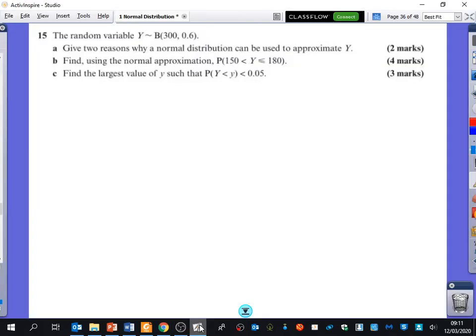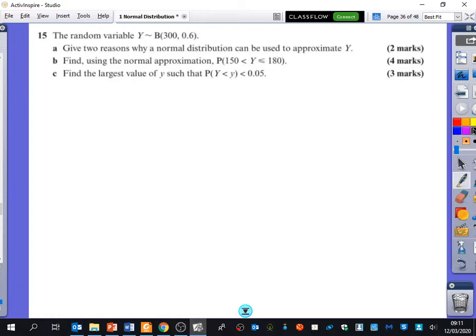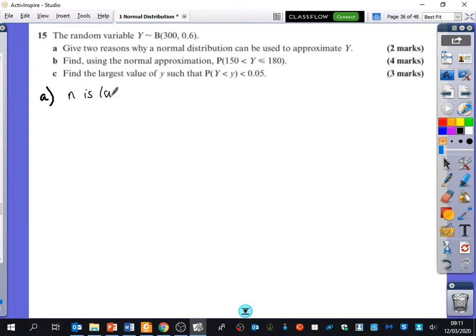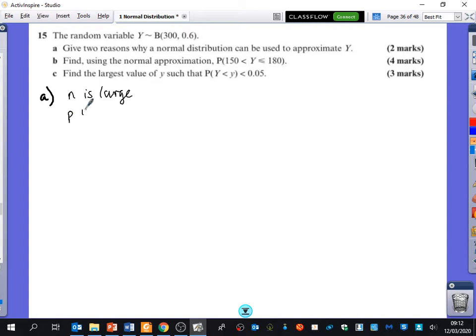OK, so let's have a quick look at 15. We've got this random variable here. Give two reasons why a binomial distribution can be used. Well, that's the same old reasons as before. Because n is large and p is approximately 0.5.